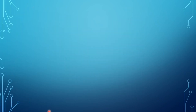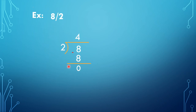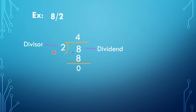Euclid's division lemma. We will understand it with an example. Let us take a simple division: 8 by 2. This is dividend, this is the divisor, this is the quotient, and this is the remainder. You already know this from your earlier classes. In this division, we got remainder as 0.